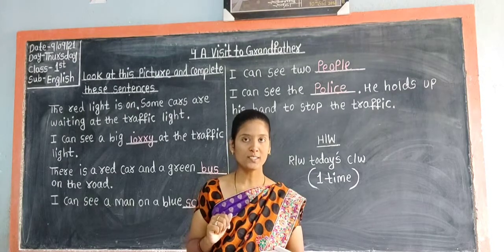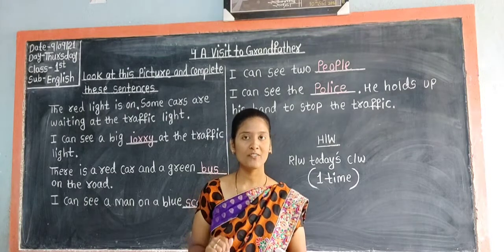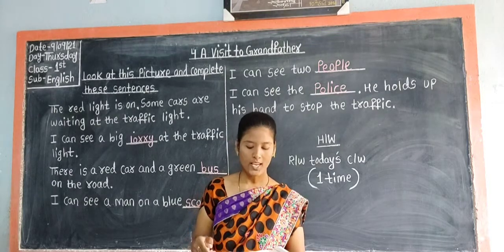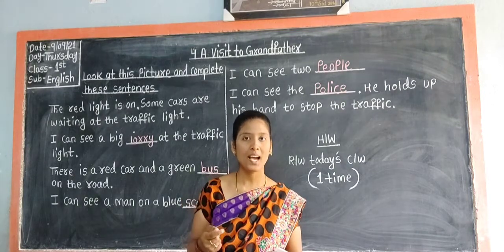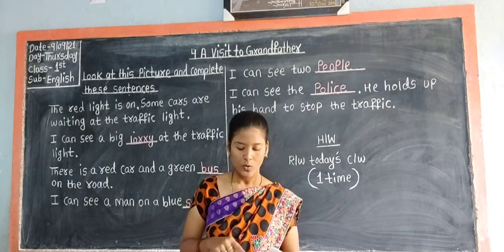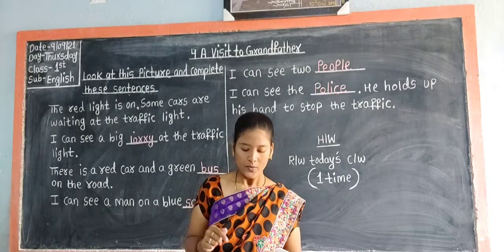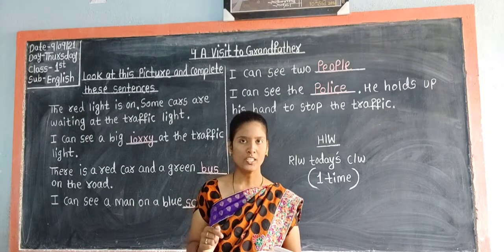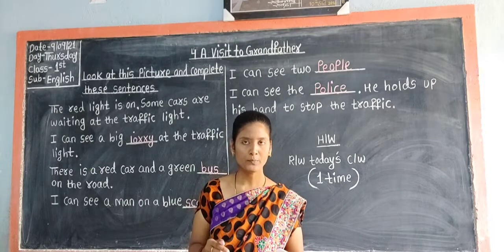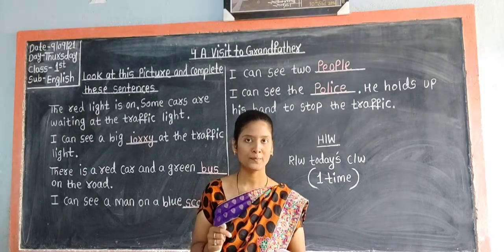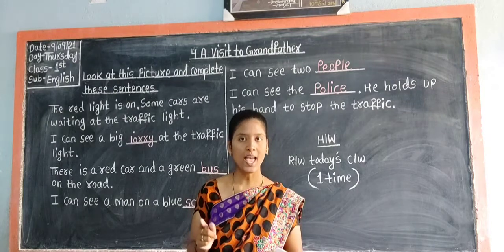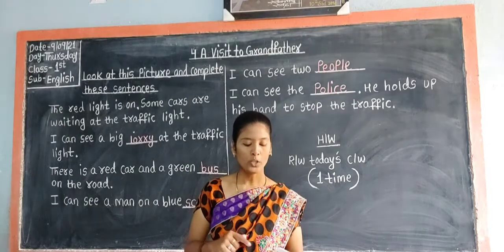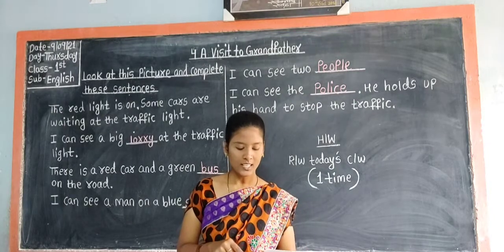Look at the first picture children. What you can see? Very good — a boy is watering the plants. The first sentence is: 'Water the trees and plants.' Is it a good action for nature? Yes, it is a good action for nature. So put a tick next to the sentence.